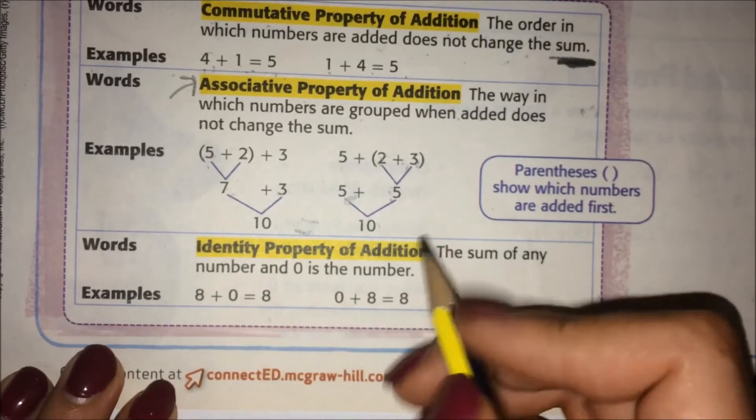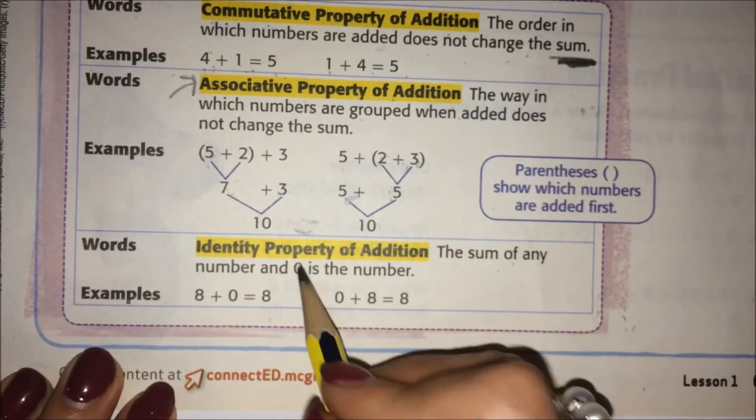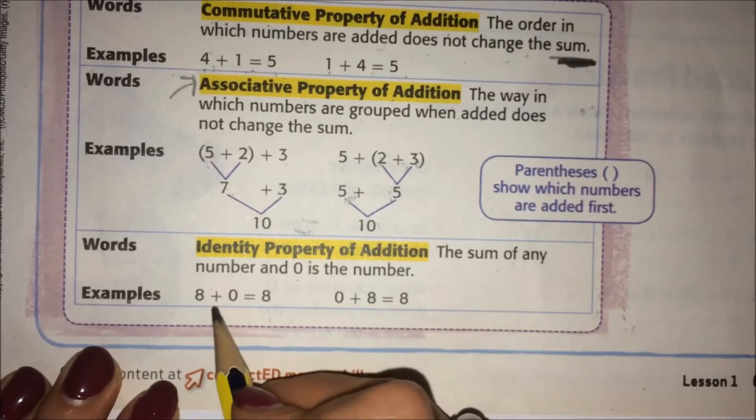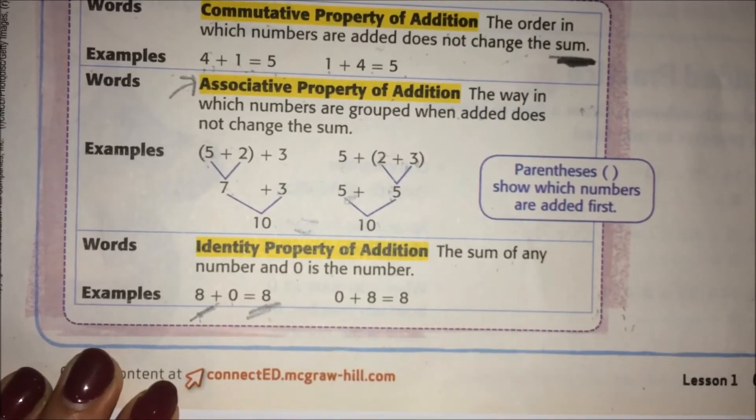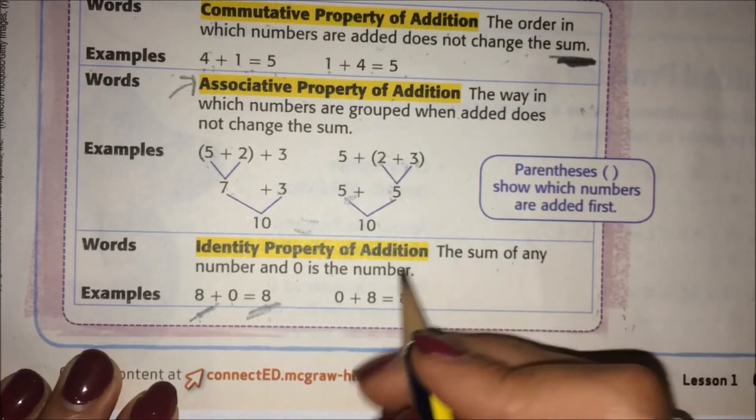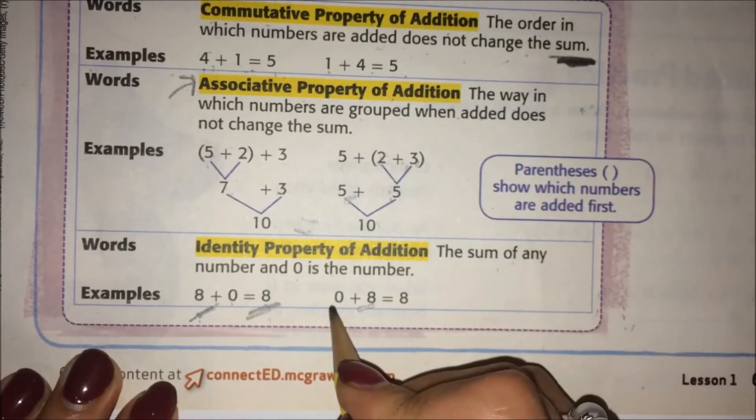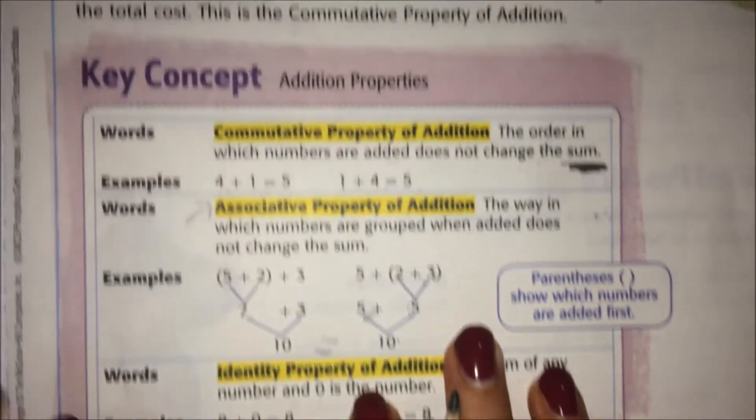For numbers, it means the sum of any number and zero is the number. So eight's identity is eight. You can add a zero and he's still going to be an eight. Eight's always eight. Doesn't matter if the zero is first or last. Eight is eight.